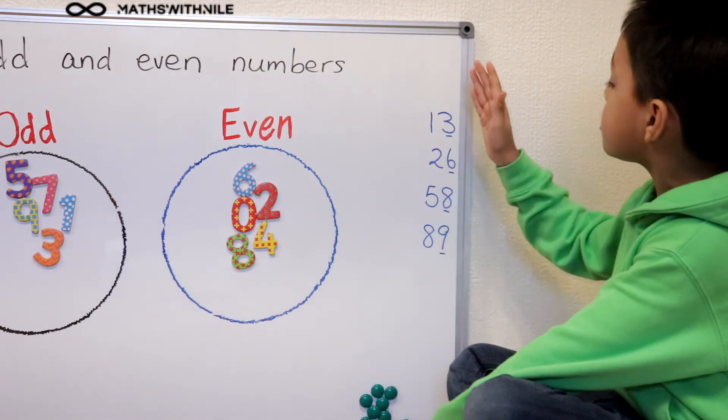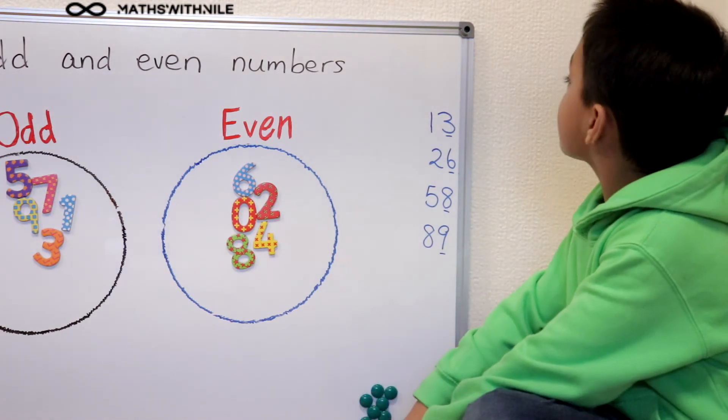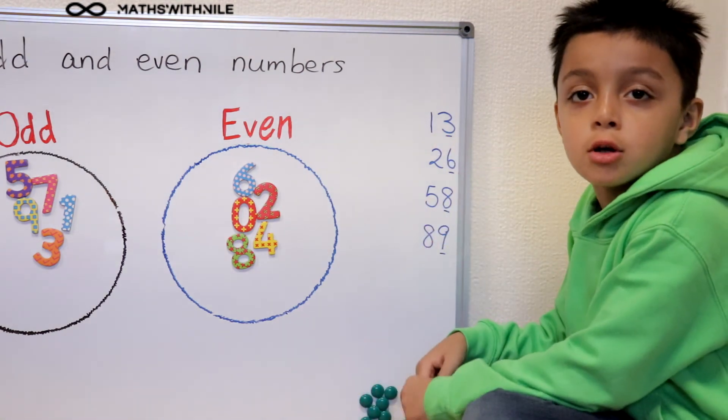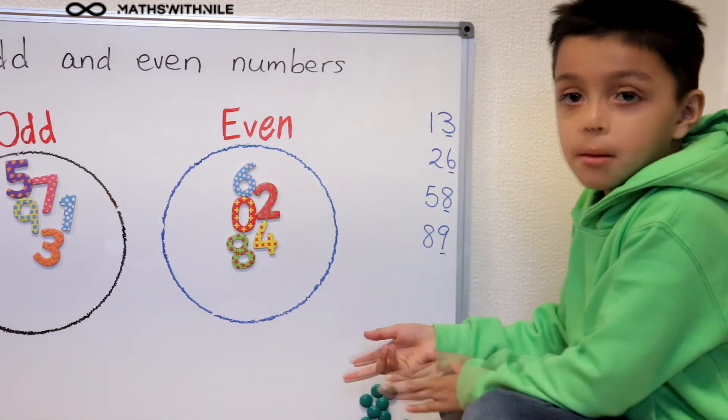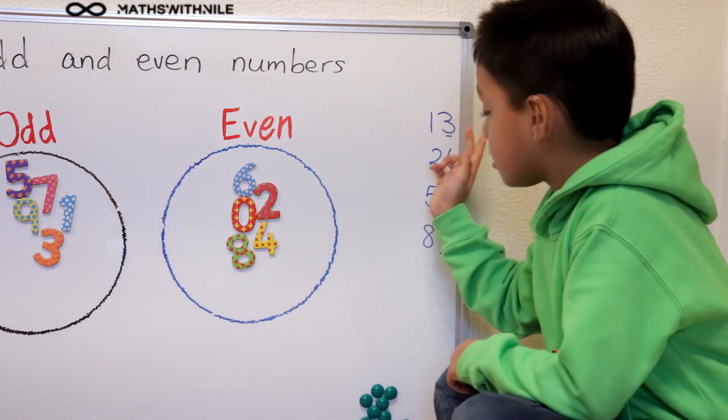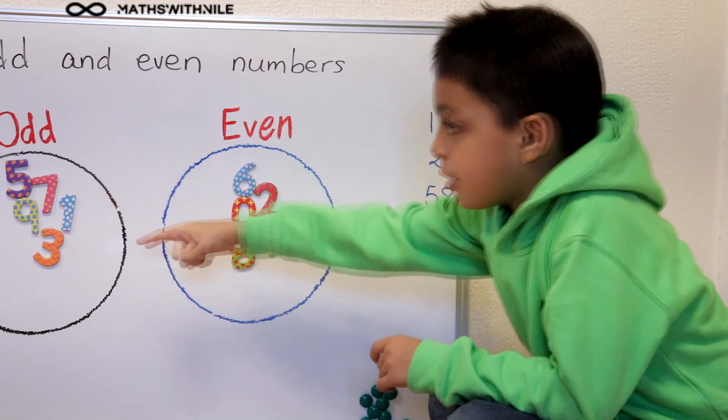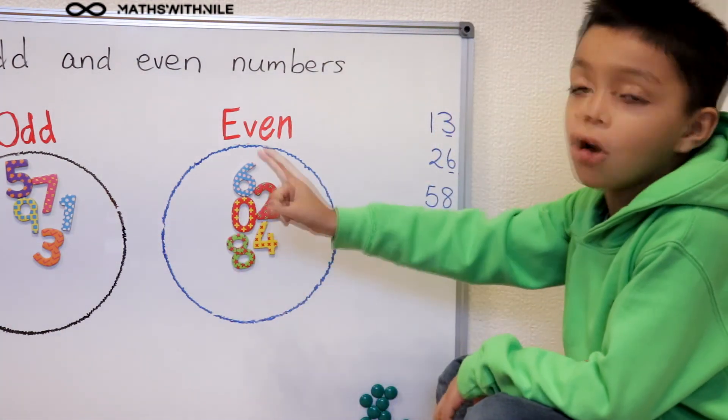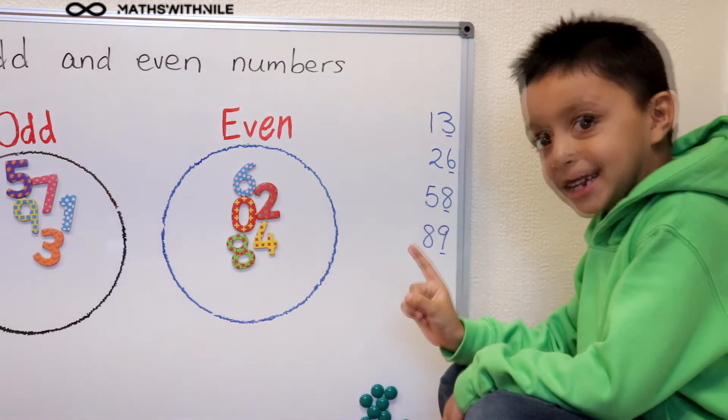Now we're going to look at these numbers. So we've got 13. The way we know it's an odd or even number is by checking the last number. Three is an odd number, so 13 goes in the odd group if it was a magnetic.